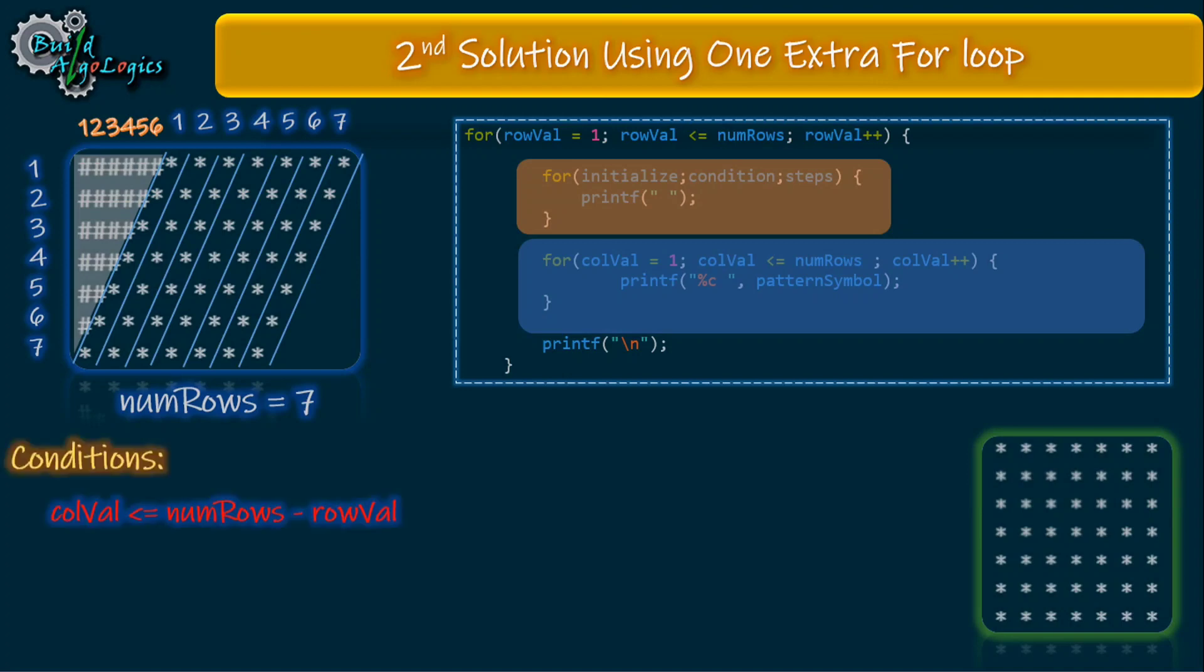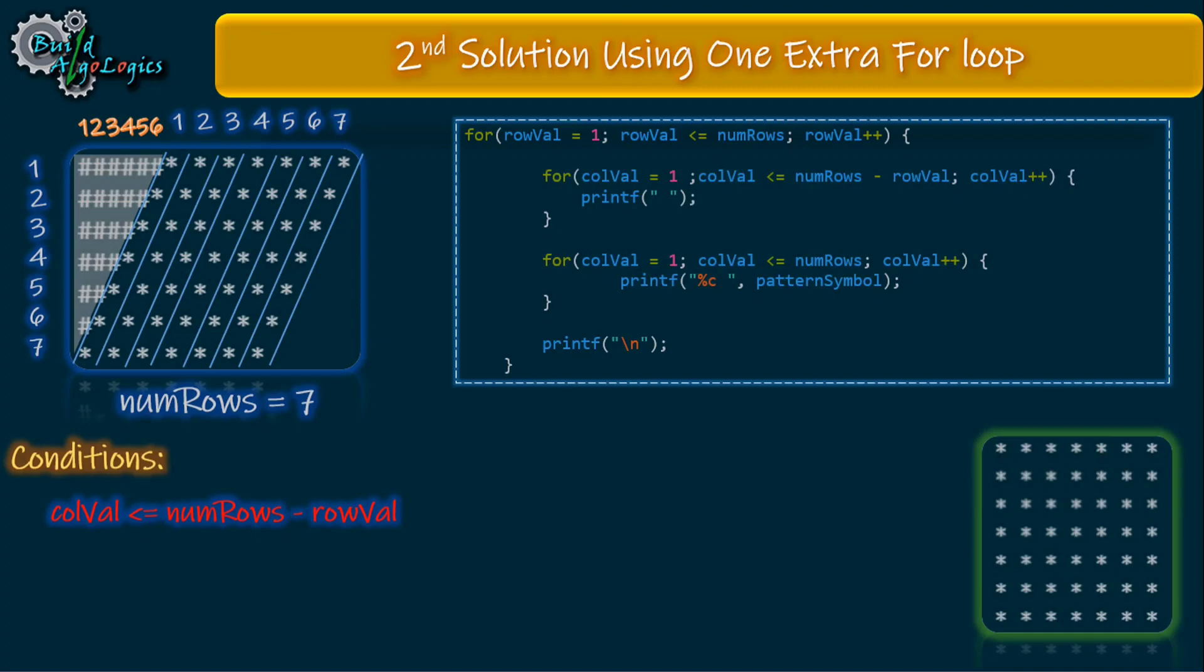It means that we can write our condition like this. We already wrote this condition while solving this problem by using if block. For row value 1, this loop will run 6 times as numRows are 7 here. For row value 2, this loop will run 5 times because 7 minus 2 is nothing but 5, and so on. This is our second solution of this pattern.